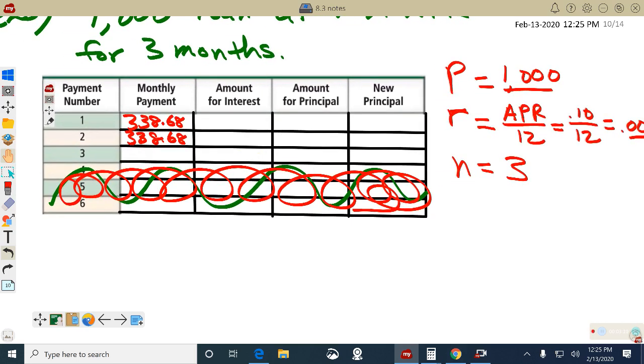Let's do this. So whoever is borrowing this $1,000 is going to pay $338.68 for the first month. How much of that, go grab your stamp sheet. Some of it's going to go to the bank and some of it's going to go towards the amount borrowed.